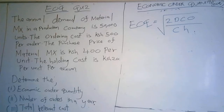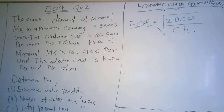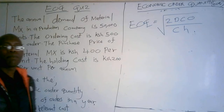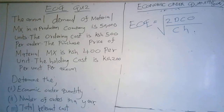Now here is a question on this side of the whiteboard. The annual demand of material MX in a production company is 50,000 units. The ordering cost is 500 shillings per order. The purchase price of material MX is 400 shillings per unit. The holding cost is 200 shillings per unit per annum. Determine: (i) the economic order quantity, (ii) the number of orders in a year, and (iii) the total relevant cost.